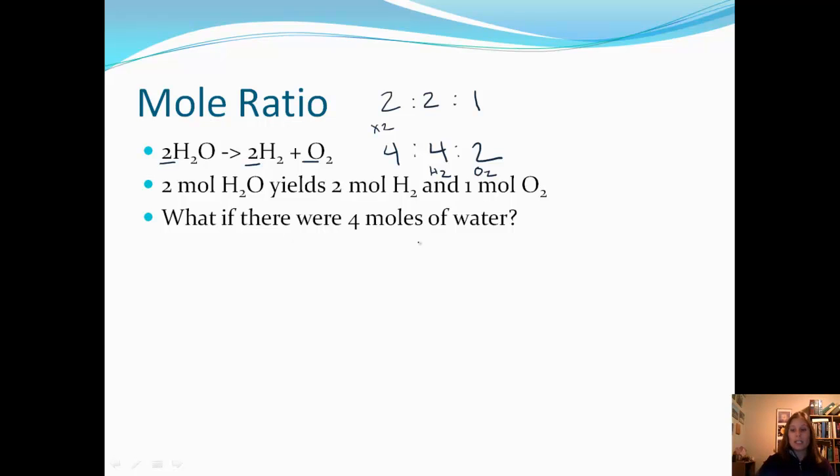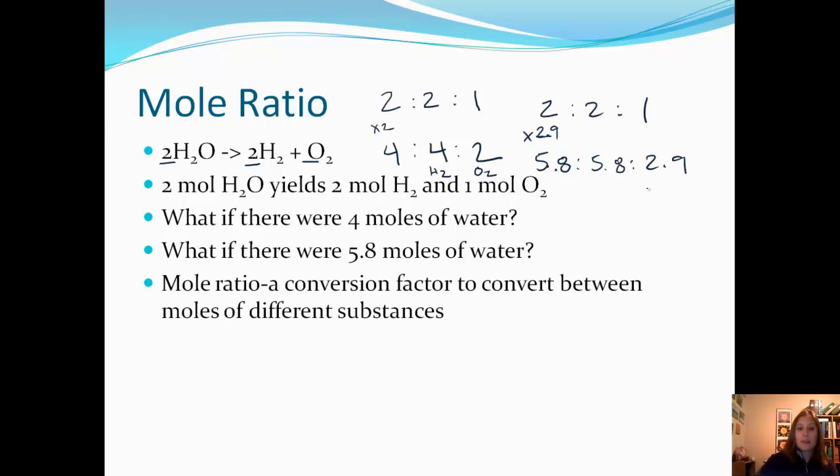We could do any quantity. What if we had 5.8 moles of water? We would figure out what it took times that 2 to get 5.8. All we'd have to do is take our calculator, 5.8 divided by 2, and that comes out to 2.9. So we would multiply everything by 2.9. So you get 5.8 to 5.8 to 2.9, but our ratio is still the same.